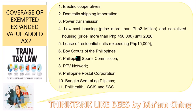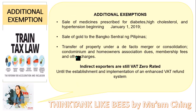Coverage of expanded value-added tax. First are the electric cooperatives, domestic shipping importation, power transmission, low-cost housing with price more than 2,000,000, and socialized housing with price more than 450,000 until 2020. Number 5 is the lease of residential units exceeding 15,000. Also covered: Boy Scout of the Philippines, Philippine Sports Commission, PTV Network, Philippine Postal Corporation, Bangko Sentral ng Pilipinas, PhilHealth, GSIS, and SSS.